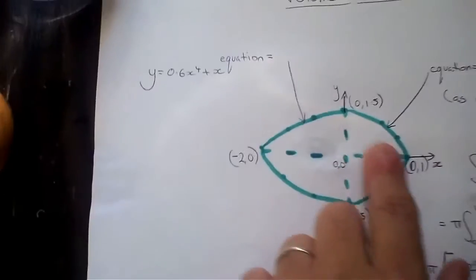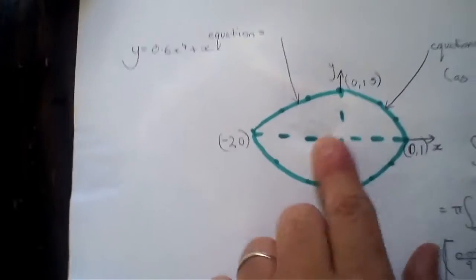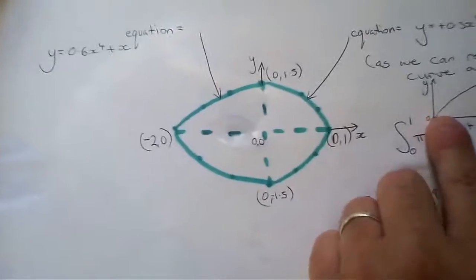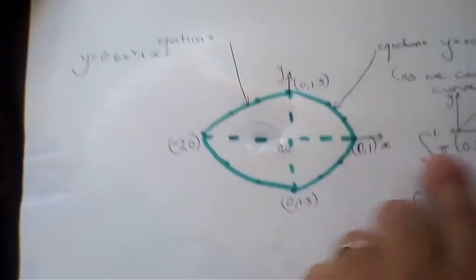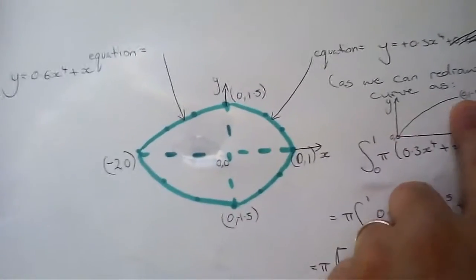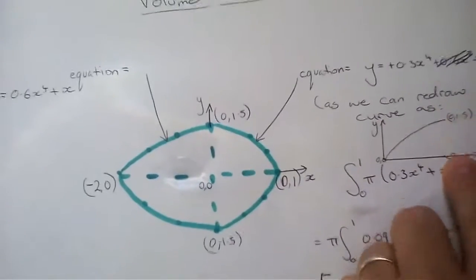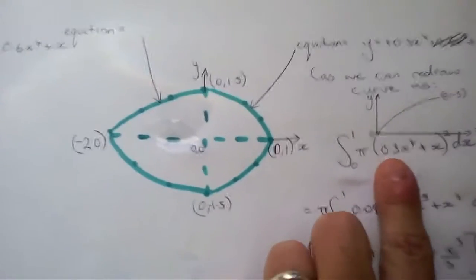Now, just looking at this side of the egg, you can actually redraw this curve so it's easier. You can flip it over and start at zero and have it going out to the same y-point. So then we put it into the integral.